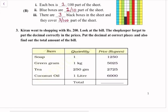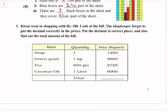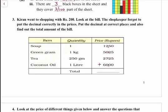Question number 3: Kiran went shopping with Rs 200. Look at the bill — the shopkeeper forgot to put the decimal correctly in the prices. Put the decimal at the correct places and also find out the total amount of the bill. So we place the decimal: 12.50, 15.25, 27.25, and 60.00. If we add all these rupees, we get 115 rupees total.